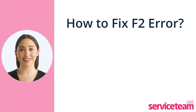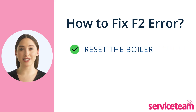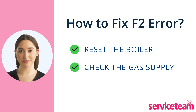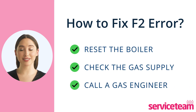Let's see how to fix this F2 error code in Ideal boilers. Sometimes a simple boiler reset can resolve the issue. If it doesn't work, check your gas supply for any problems. Make sure all other gas appliances are working. If they're not, contact your gas supplier. If other appliances are fine but the boiler isn't, call a gas-safe engineer to inspect it.